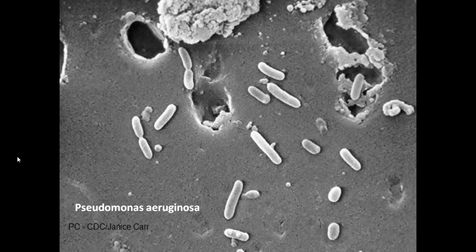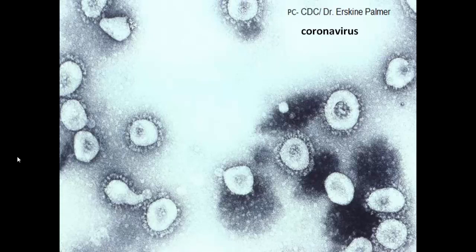Pseudomonas aeruginosa is more likely to spread to burn patients from sources of organic materials like flowers, vegetables, and green leafy vegetables. Whenever you think of Pseudomonas aeruginosa, keep in mind that it is an important infectious cause of sepsis in burn patients.